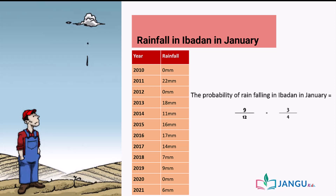The number 9 over 12 comes from experimental records; therefore, we can say that it's an experimental probability. This probability can never be exact; however, it is the best measure we can give from the data we have.